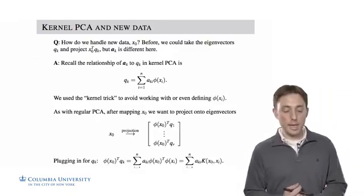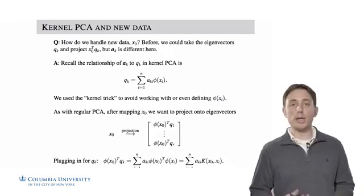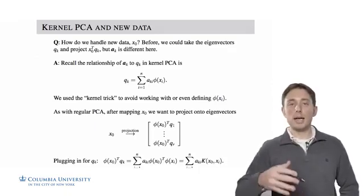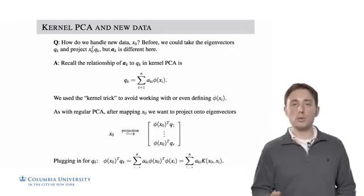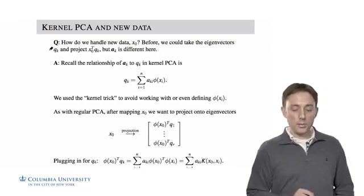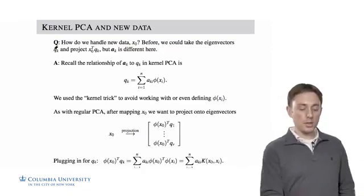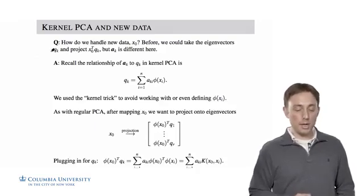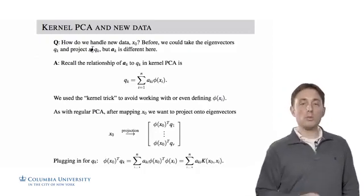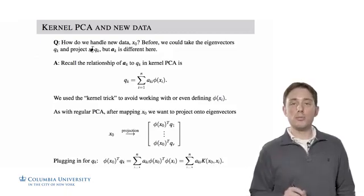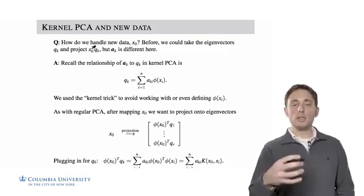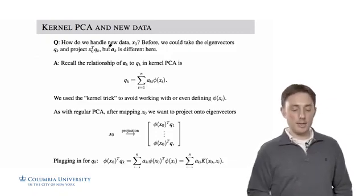An immediate question is how do we handle new data? If a new x_0 comes in, how do we project it into the lower-dimensional space using the same assumptions as the model? Before, in standard PCA, we learned eigenvectors q_k and simply multiplied the new data point x_0 by q_k to get the k-th dimension of the lower-dimensional projection, doing that dot product R times to get our R-dimensional projection. But now a_k is different, so how do we project data in this case?